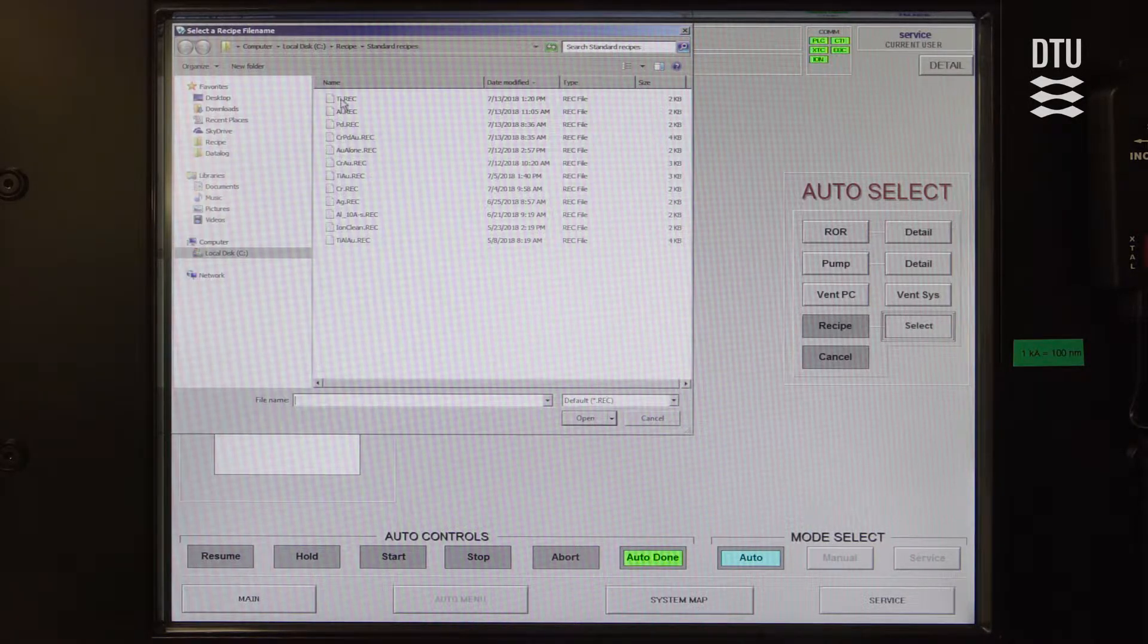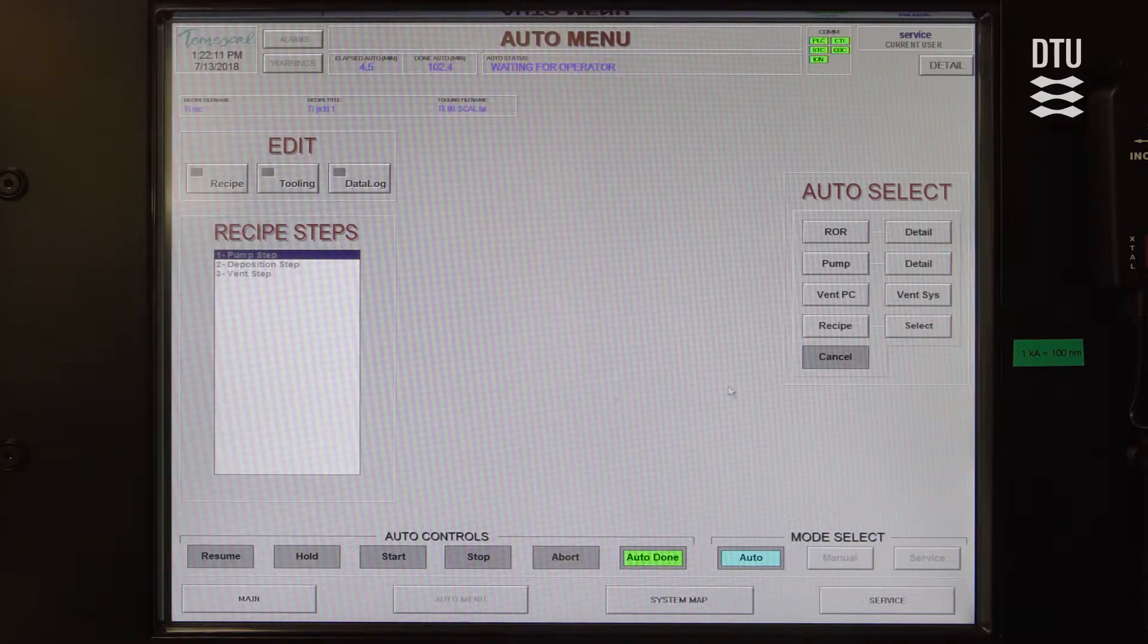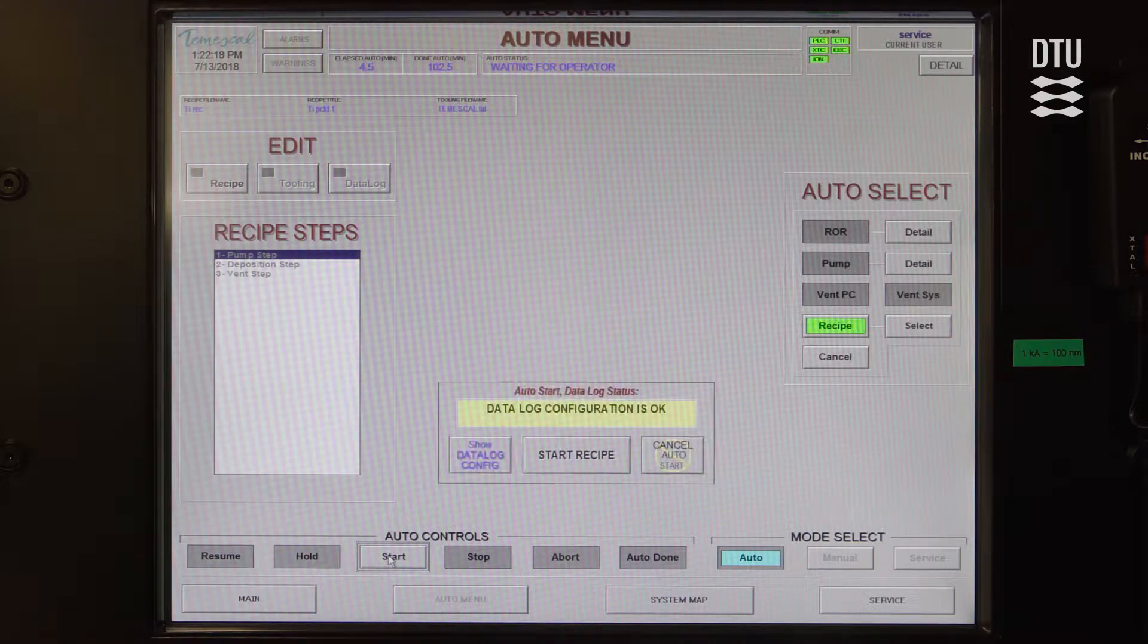We are going to run Titanium, so we open that and now we are able to activate the recipe by pressing the recipe button and then we press start. And because we have already saved the data log configuration, we can start the recipe immediately.